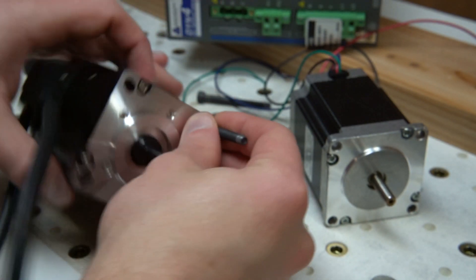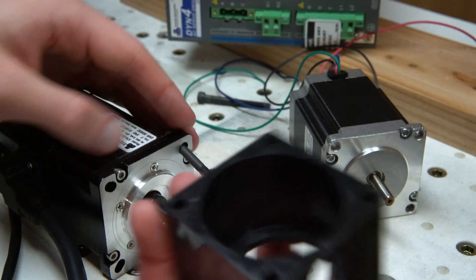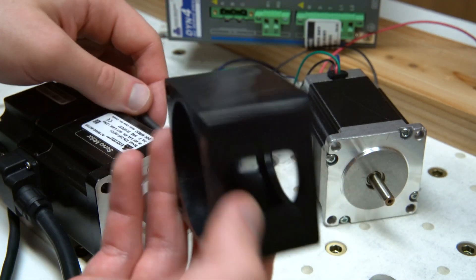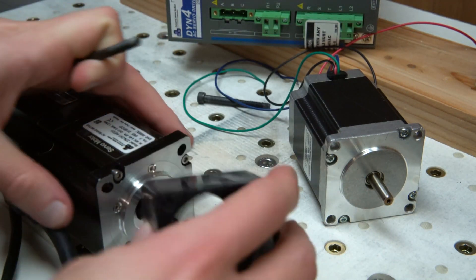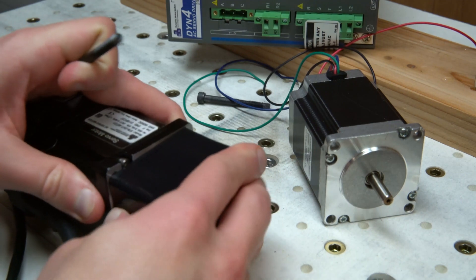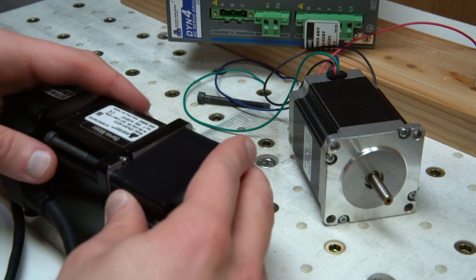They're nowhere near the mounting circumference for NEMA 23 motors. If I try to use this mount, this NEMA 23 mount that came with my machine, it's basically impossible to use with these motors.